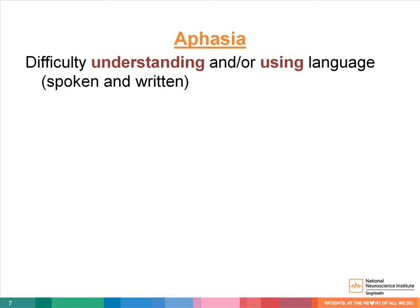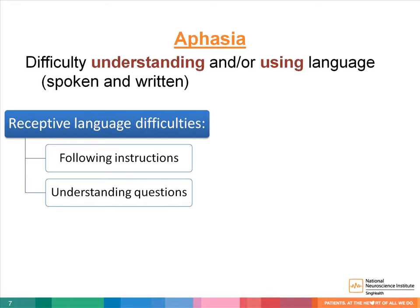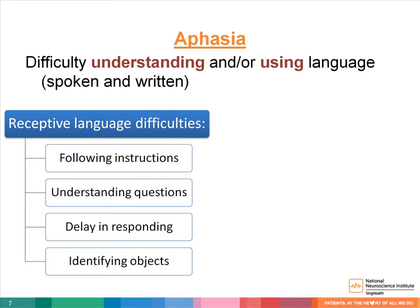A person with aphasia may have problems following instructions — for example, when you ask him to raise his hand — understanding questions, for example when asking for his name, giving delayed responses, and difficulty identifying objects, for example taking a plate when asked to take the cup.